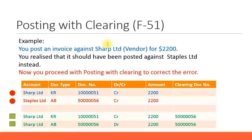Posting with clearing — the transaction code used for vendor posting with clearing is F-51. I have displayed it here because that's the transaction code we will use in our example. Consider this scenario: you have posted an invoice against Sharpe Limited, which is a vendor, for $2,200. Then you realize it's a mistake and it should have been posted against Staples Limited instead. So you proceed with posting with clearing to correct the error. Sharpe Limited will have document type KR, which is a vendor invoice, with a credit entry of $2,200.